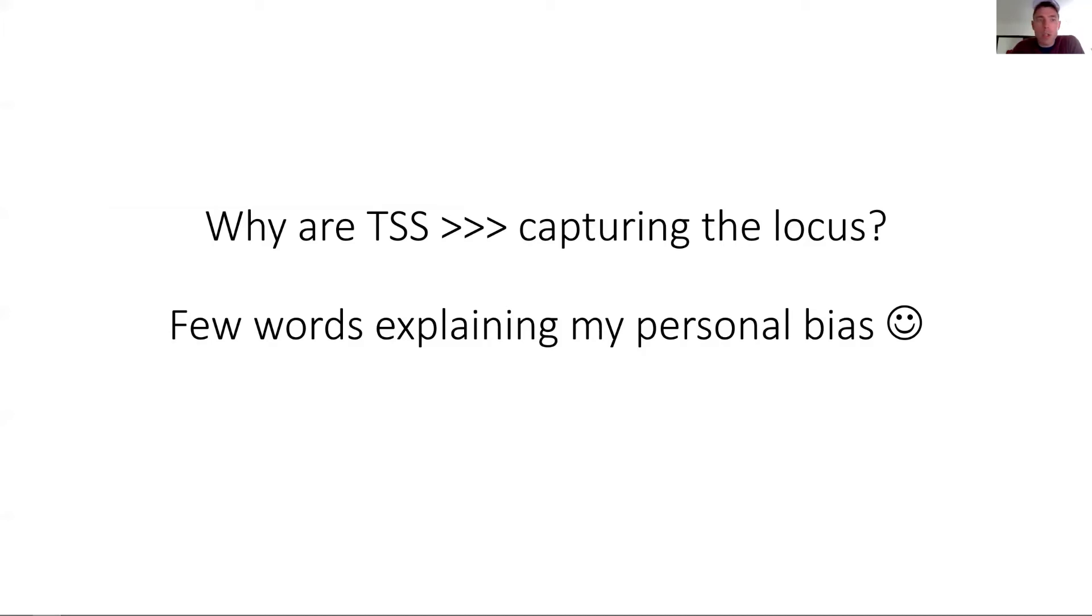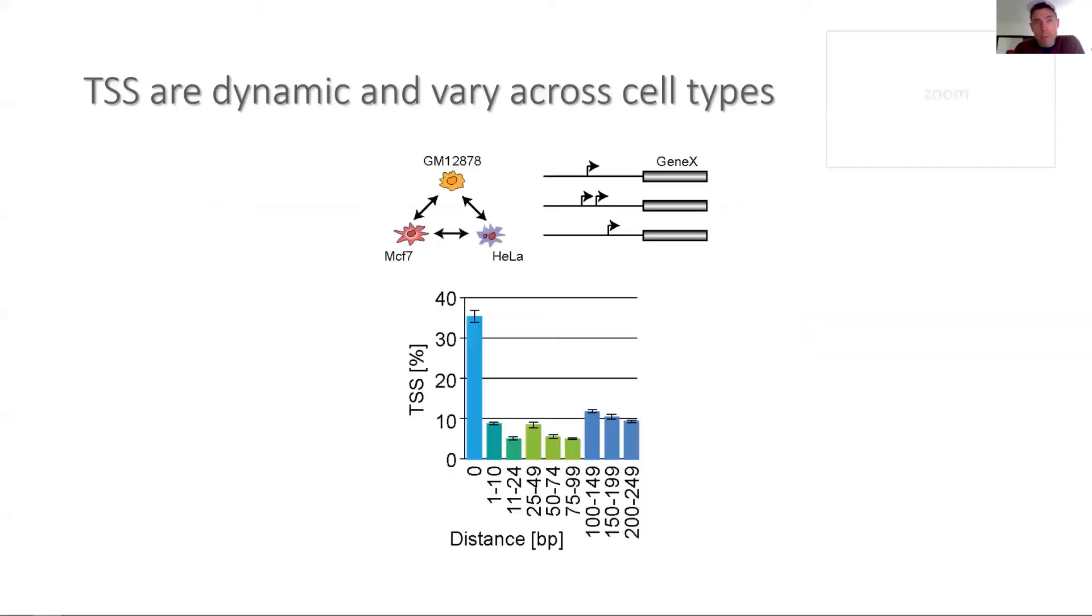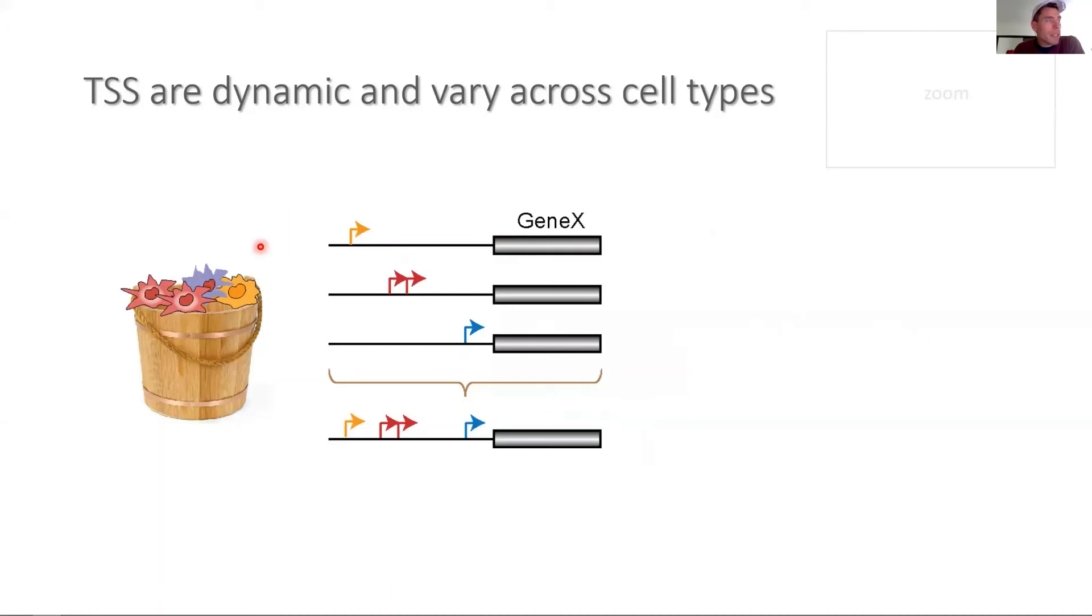Perhaps a couple of points on why transcription start sites are very powerful—I argue even better than capturing the locus of an enhancer or promoter. As insinuated earlier, transcription start sites are dynamic. If we compare here these three cell lines, you will actually see that only about 35% of the genes—here we only look at promoters that are conserved or expressed in all three of those cell types. Among those that are co-expressed in all these three cell lines, and it's only promoters which are less flexible than the non-coding or the enhancers, only about 35% have identical start sites. The rest varies to various degrees. So start sites are dynamic.